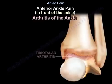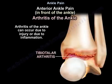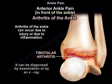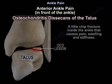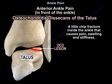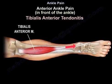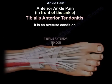Arthritis of the ankle can occur due to an injury or inflammation, and can be diagnosed by examination or by an X-ray. Osteochondritis of the talus is a small chip fracture inside the ankle that causes pain, swelling, and stiffness. Tibialis anterior tendonitis is an overuse condition.